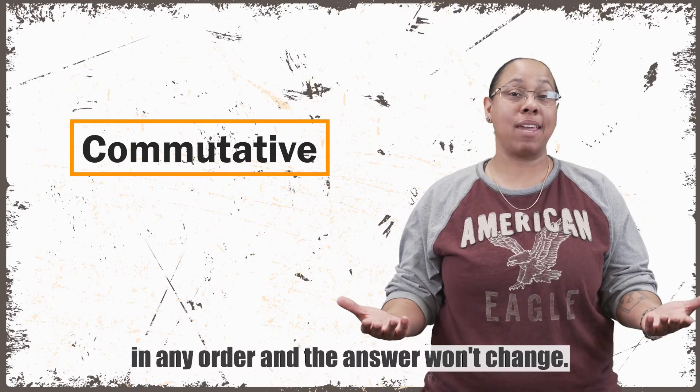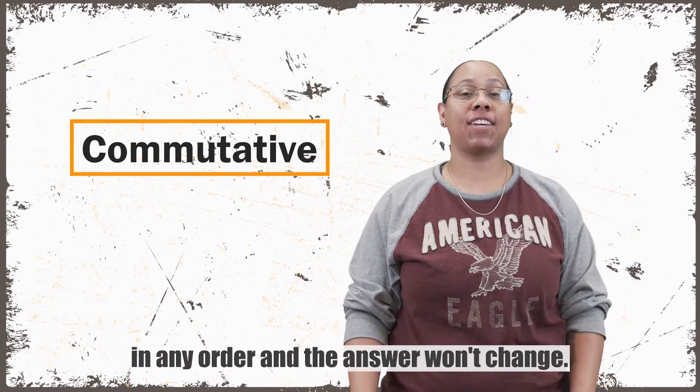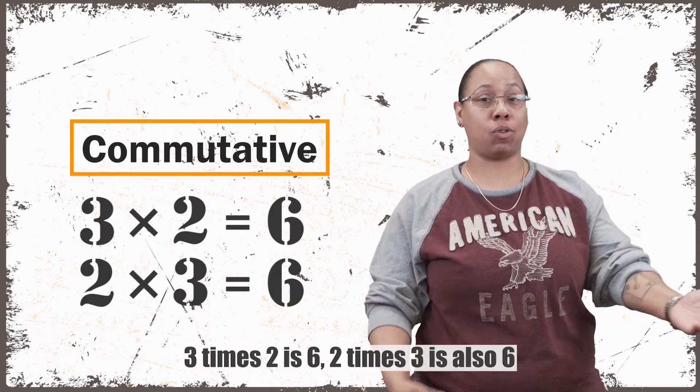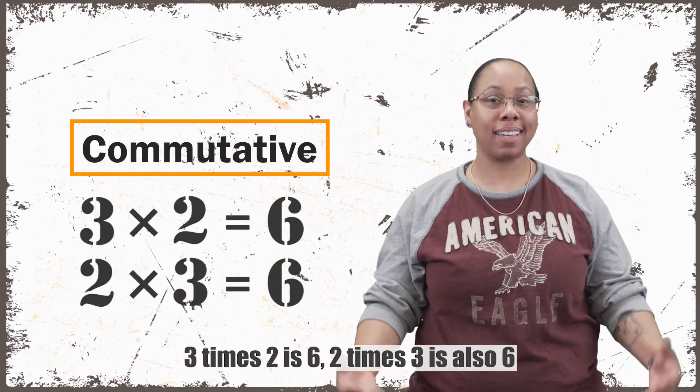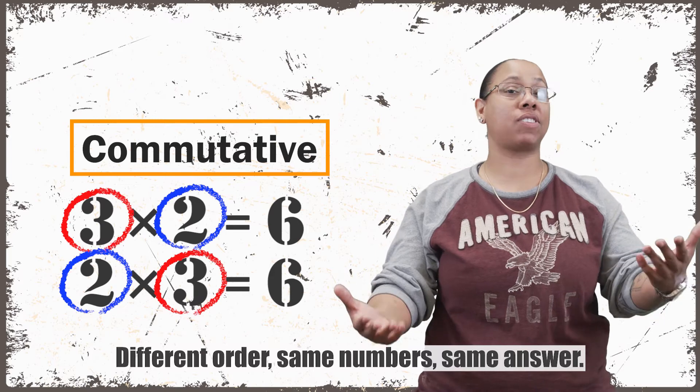The thing about multiplication, it's called commutative. That means you can multiply in any order and the answer won't change. For instance, 3 times 2 is 6. 2 times 3 is also 6. Different order, same numbers, same answer.